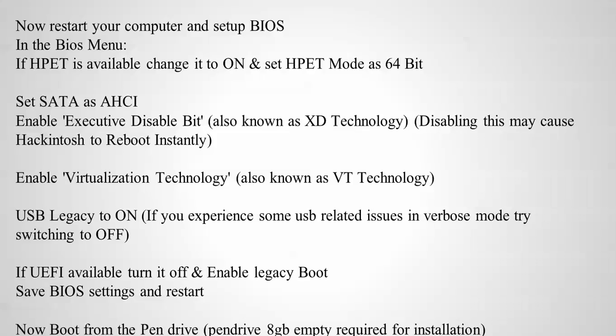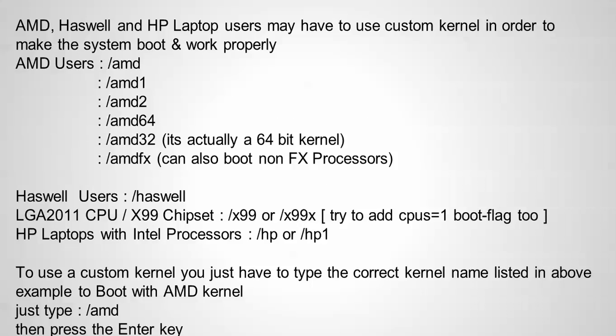If you are booting with a pen drive, you need to have an 8GB pen drive with free space for installation. This is for AMD processors — it's 64-bit supported. If you are using an AMD processor to install, you need to type /amd and then press Enter in order to use AMD. This is the procedure method you need to follow.